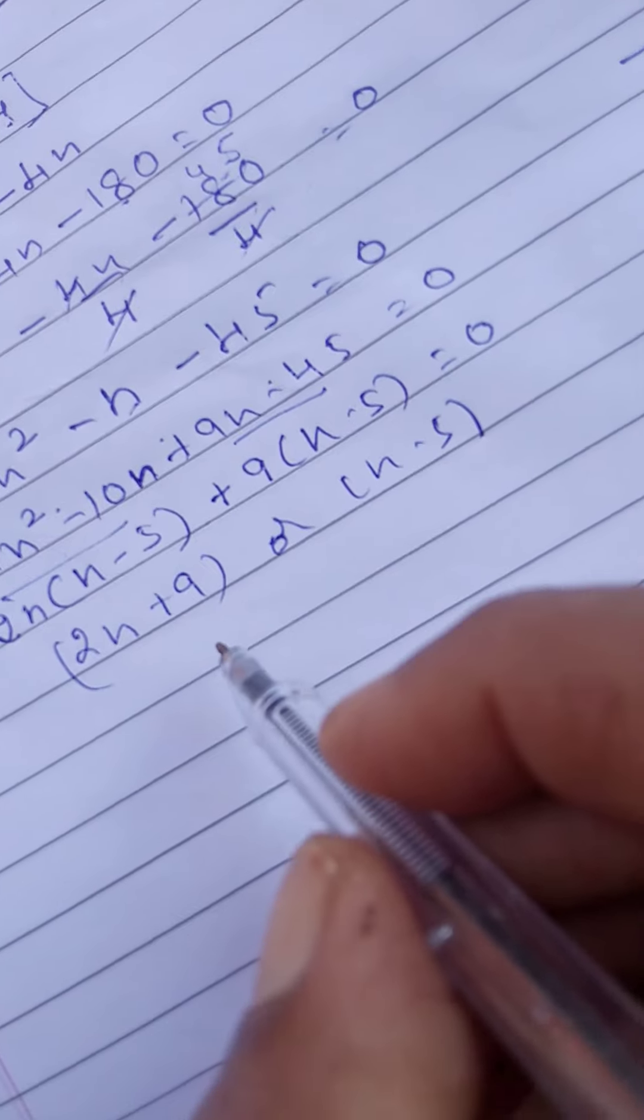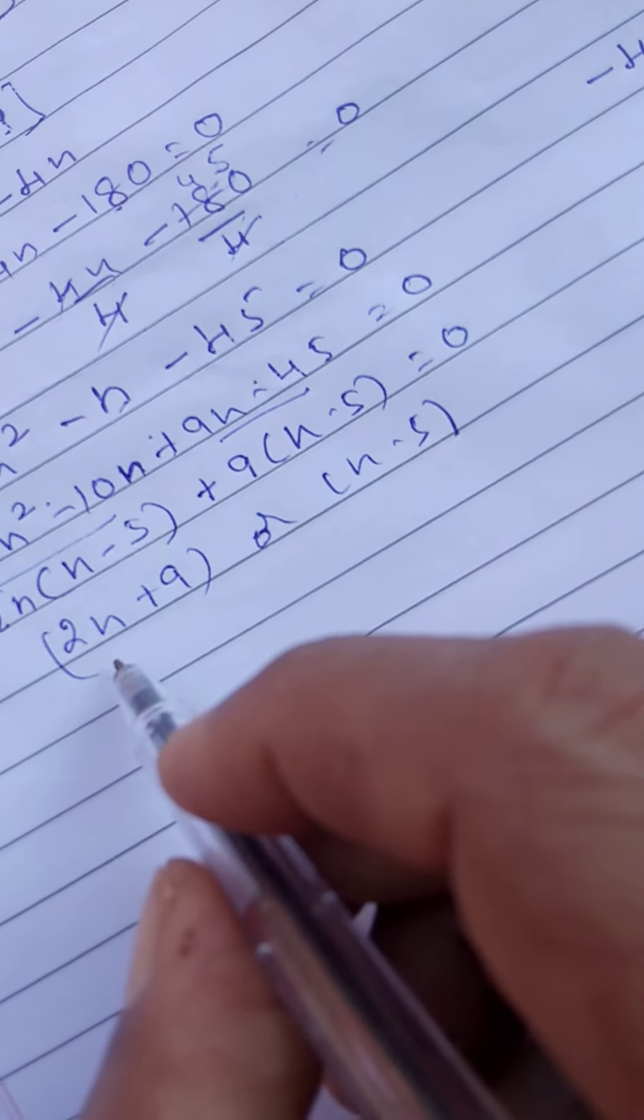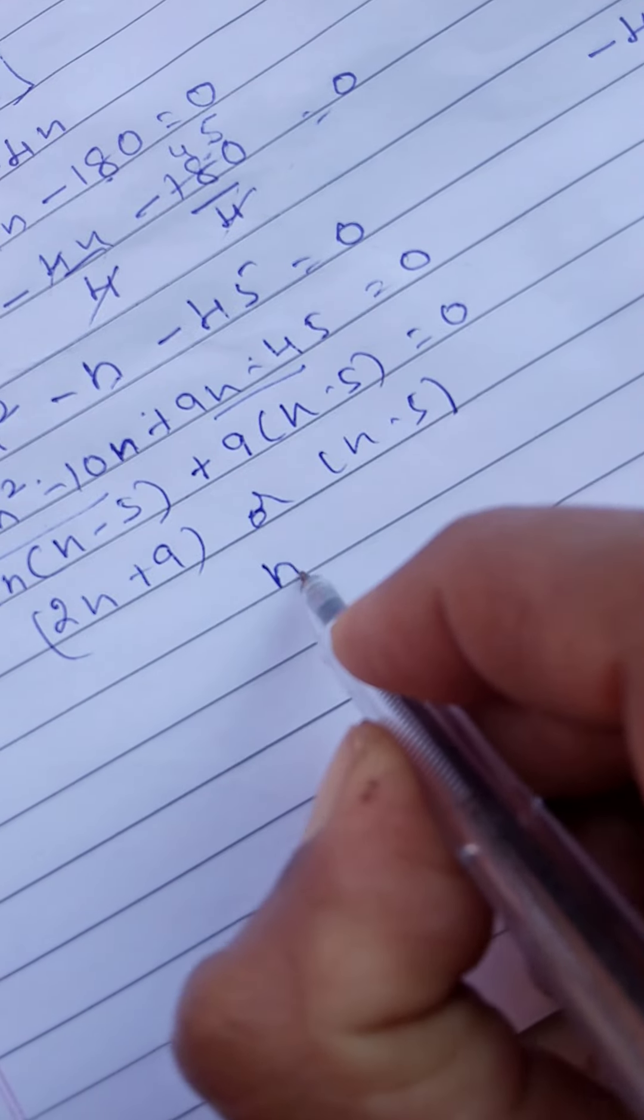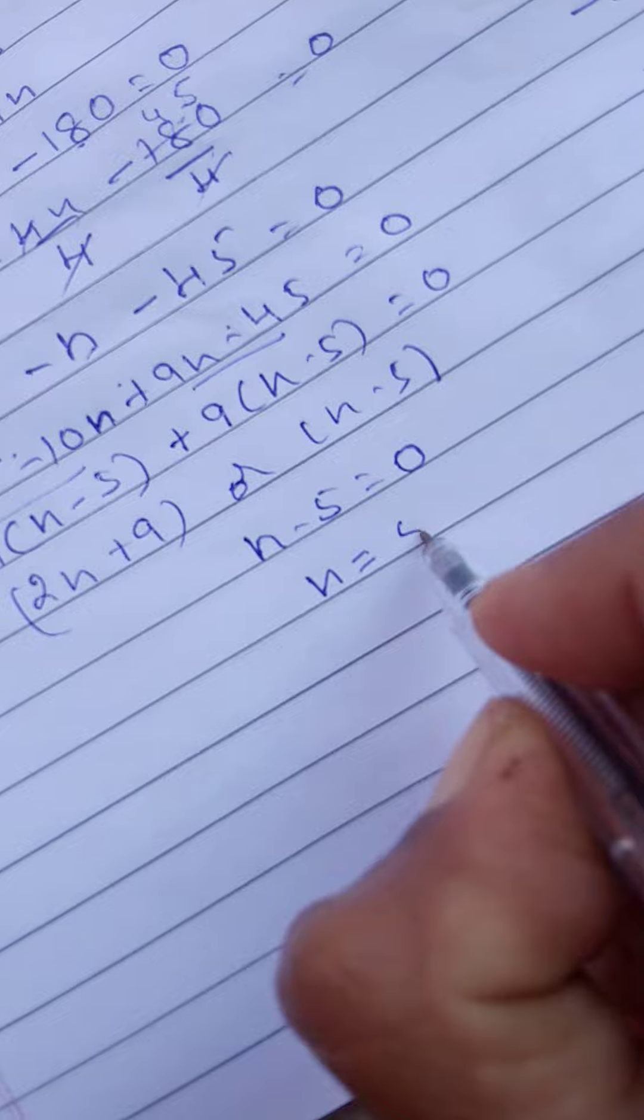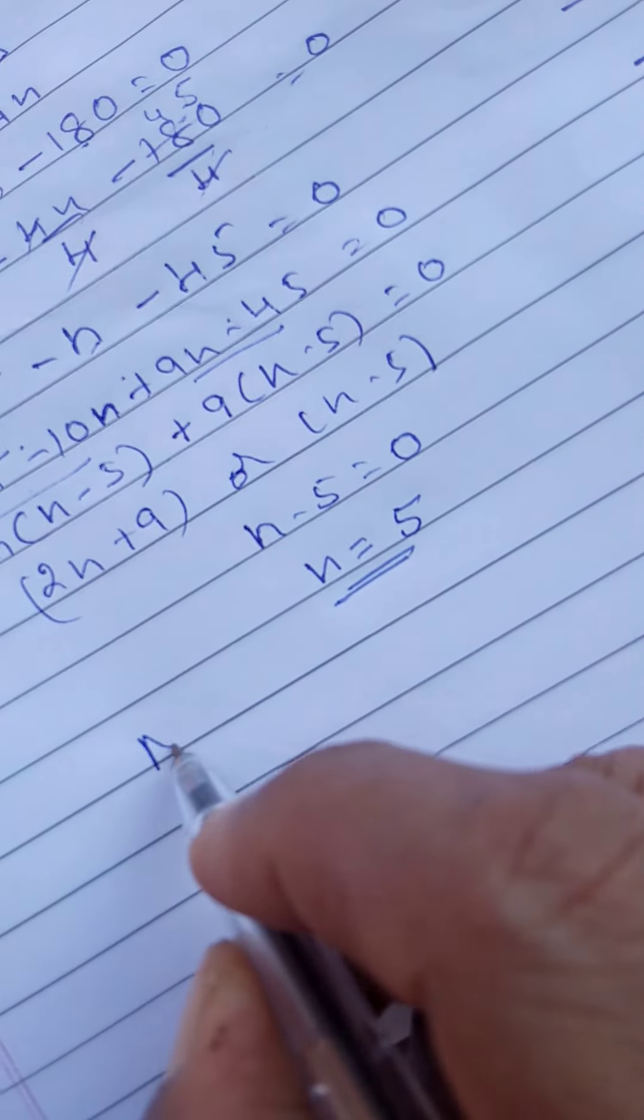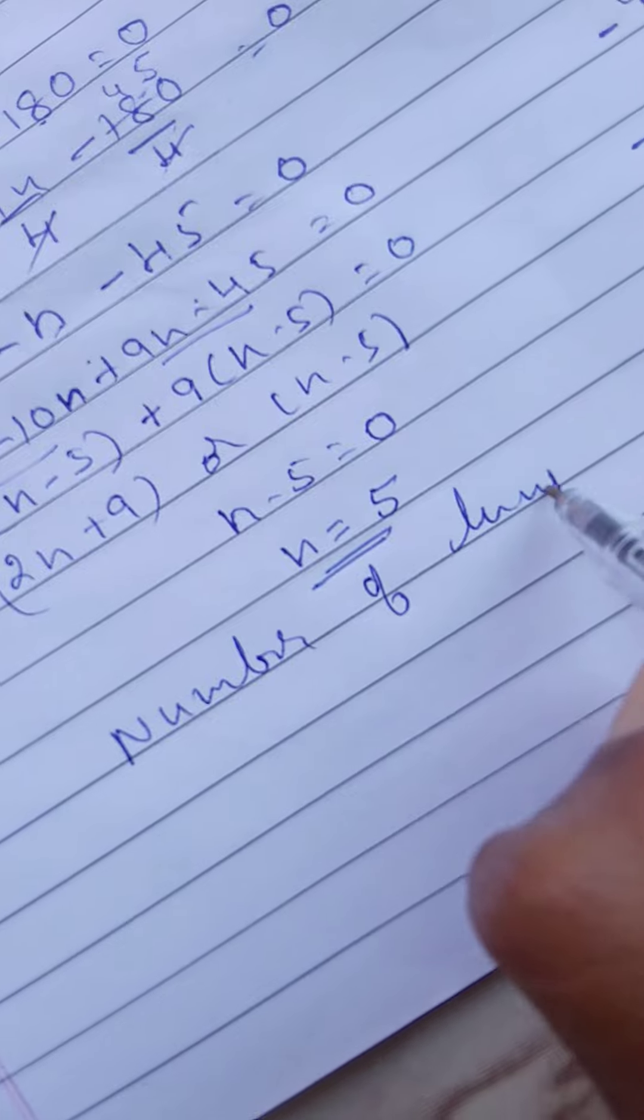Number of terms we should take only positive numbers. We can't take the fractions. So, n minus 5 is equal to 0. Therefore, n is equal to 5. Number of terms is 5.